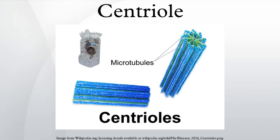At that point the mother and daughter centrioles separate dependently on an enzyme called separase. The two centrioles in the centrosome are tied to one another. The mother centriole has radiating appendages at the distal end of its long axis and is attached to its daughter at the proximal end. Each daughter cell formed after cell division will inherit one of these pairs.